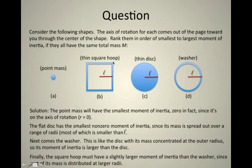that distance L, this corner is going to be further than a distance L away. So some of its mass is an mR squared that's even bigger than the washer is. So the washer is somewhat in the middle.